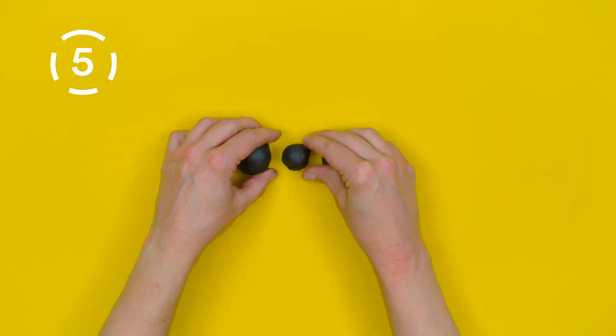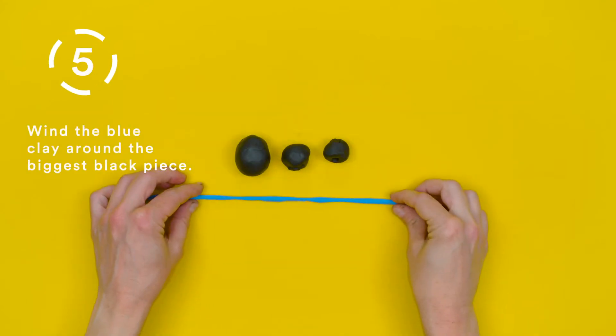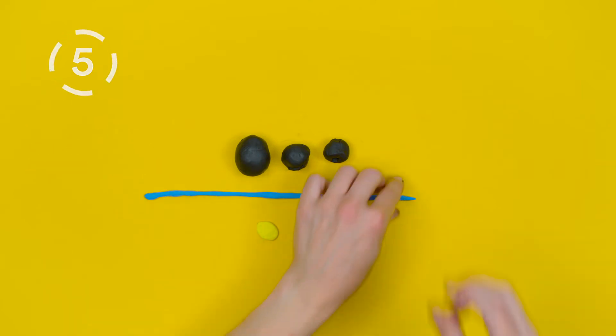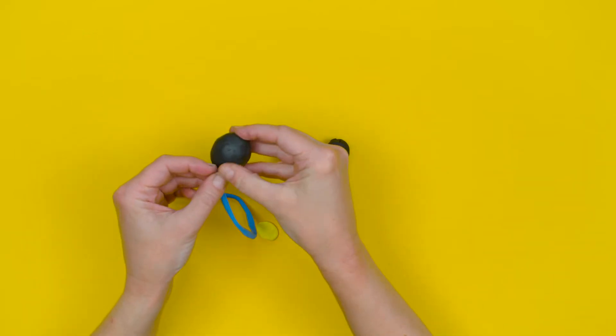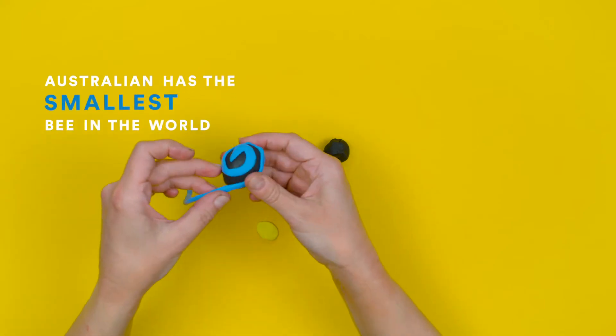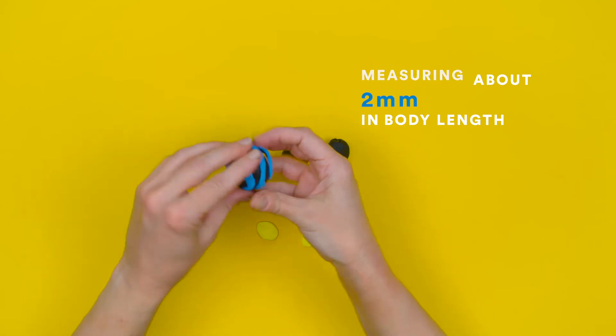Step 5. Wind the blue clay around the biggest black piece. Australia has the smallest bee in the world, measuring about two millimeters in body length.